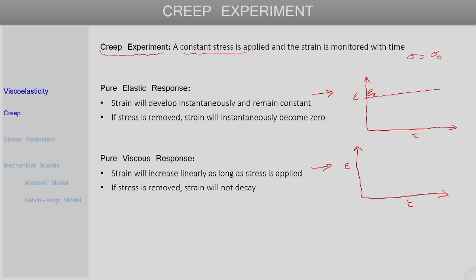If we monitor strain as a function of time for a viscous response, we will see that it increases linearly, and as long as a constant stress is applied the strain will keep on increasing linearly. If the stress is removed at a certain point of time, the strain will not decay to zero — the deformation induced due to the application of that stress will be permanent.